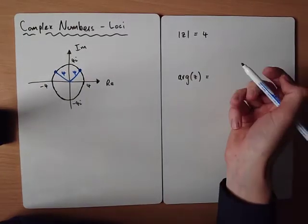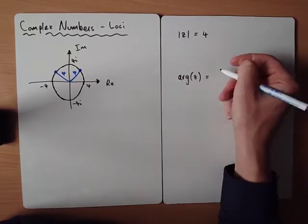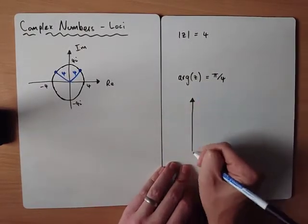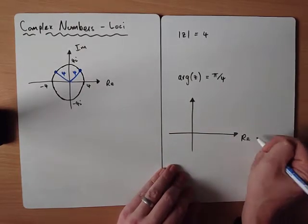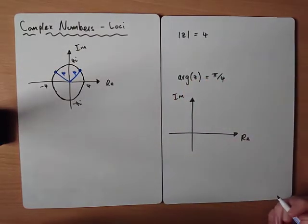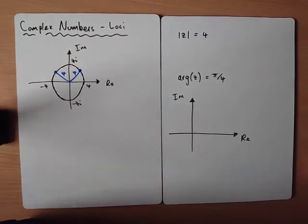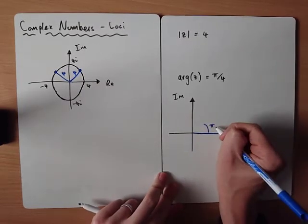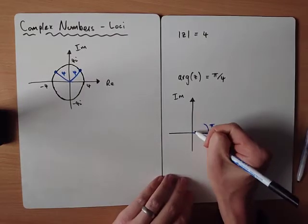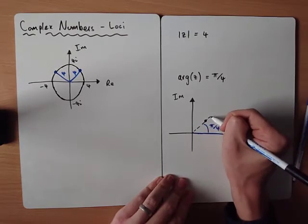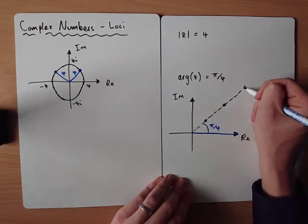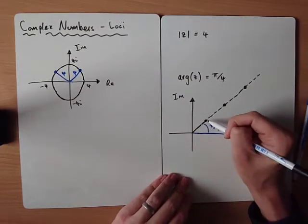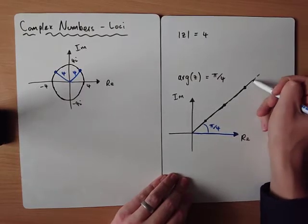If we've got the argument of z equal to something — say the argument of z equals pi over 4 — the argument is the angle measured from the positive real axis. Pi over 4 is 45 degrees, so a complex number at 45 degrees would have argument pi over 4. But so would a complex number further along that same direction, and further still — anywhere along that line the argument would be pi over 4. So we end up with something called a half line.